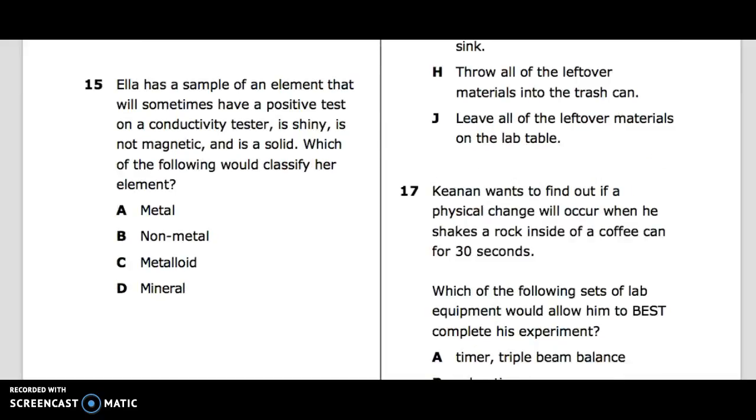15: Ella has a sample of an element that will sometimes have a positive test on a conductivity tester, is shiny and not magnetic, and is a solid. Which of the following would classify her element? A. Metal, B. Nonmetal, C. Metalloid, D. Mineral.